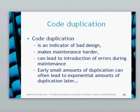Code duplication can happen at the method level, class level, and between two very similar classes. We want to avoid the same code written in multiple places — it's an indicator of bad design. It makes maintenance really hard because if you want to change one thing you'll often have to change a lot of lines of code, and it can lead to introduction of errors during maintenance. Small early amounts of duplication can lead to large amounts of duplication later.